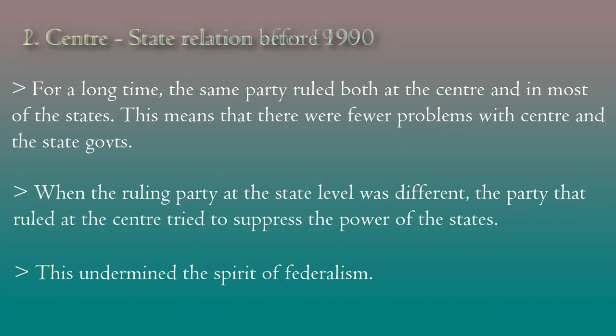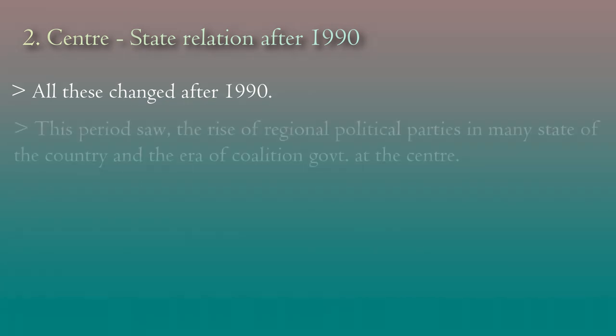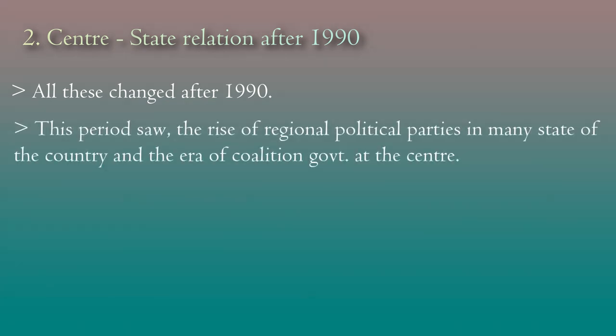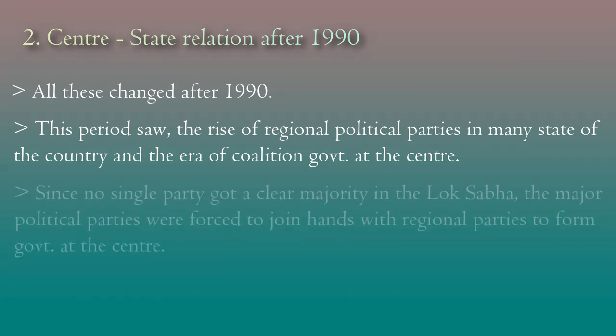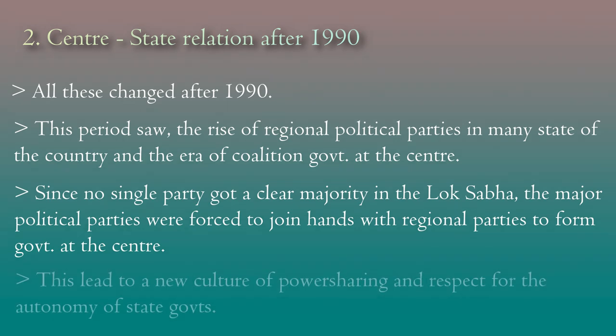All these changed after 1990. This period saw the rise of regional political parties in many states of the country and the era of coalition government at the center. A coalition government means a government formed by joining more than two political parties. Since no single party got a clear majority in the Lok Sabha, the major political parties were forced to join hands with regional parties to form government at the center.